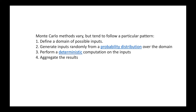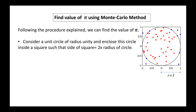Monte Carlo methods vary, but they tend to follow a particular general pattern given by these four steps: first, define a domain of possible inputs; second, generate inputs randomly from a probability distribution over the domain; third, perform a deterministic computation on the inputs; and fourth, aggregate the results. Following this procedure, we can find the value of pi.